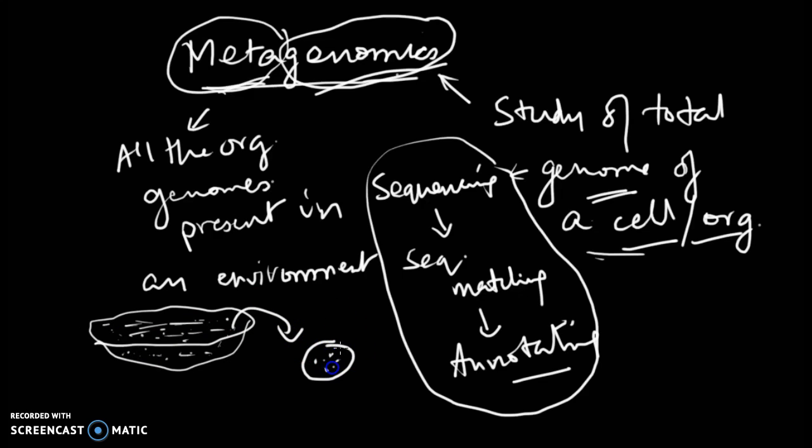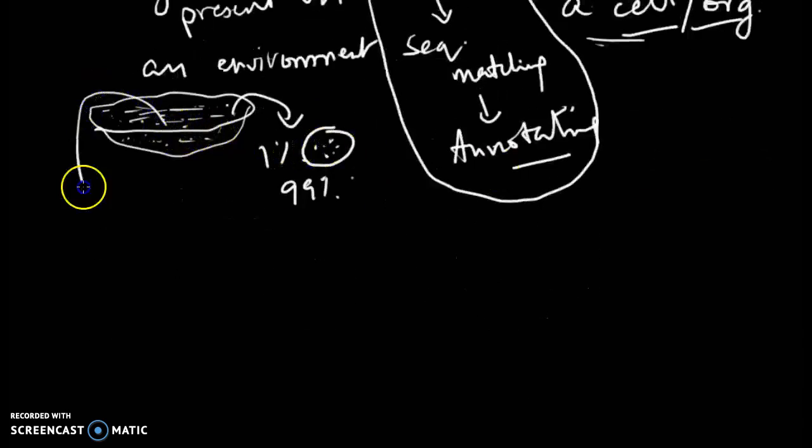Maybe one percent are growing in culture, 99% are not growing. Those could be studied by this metagenomic approach. You take water from this sample, maybe thousand liters or more, and you filter it out.